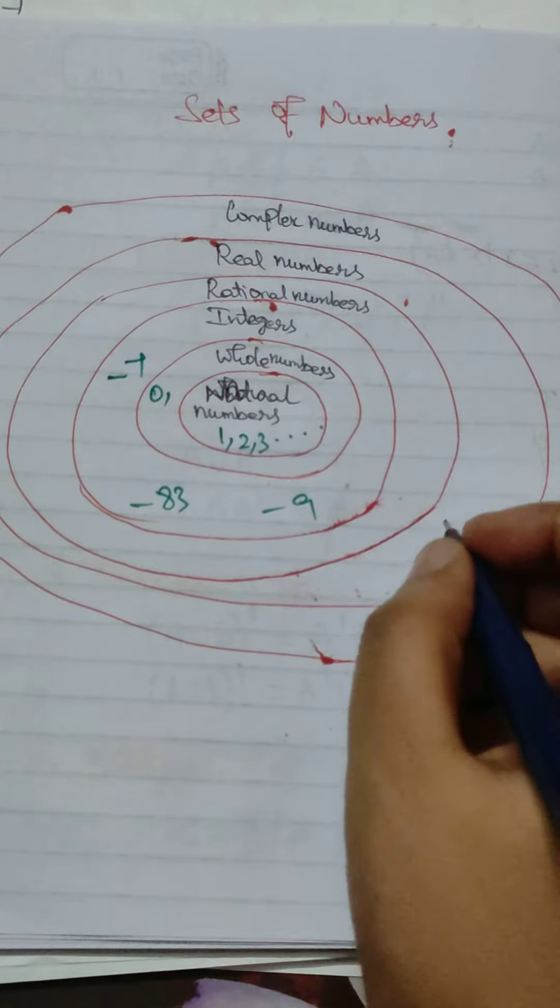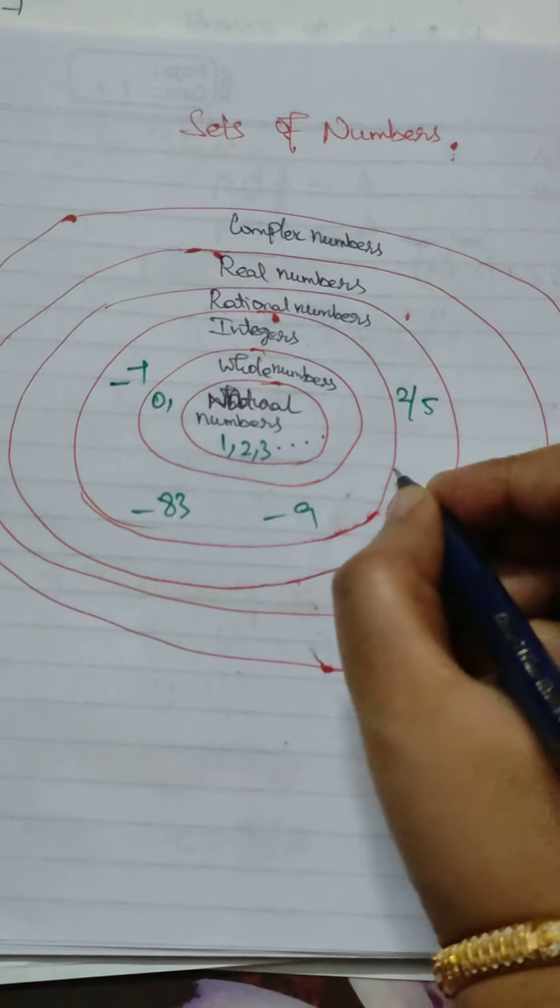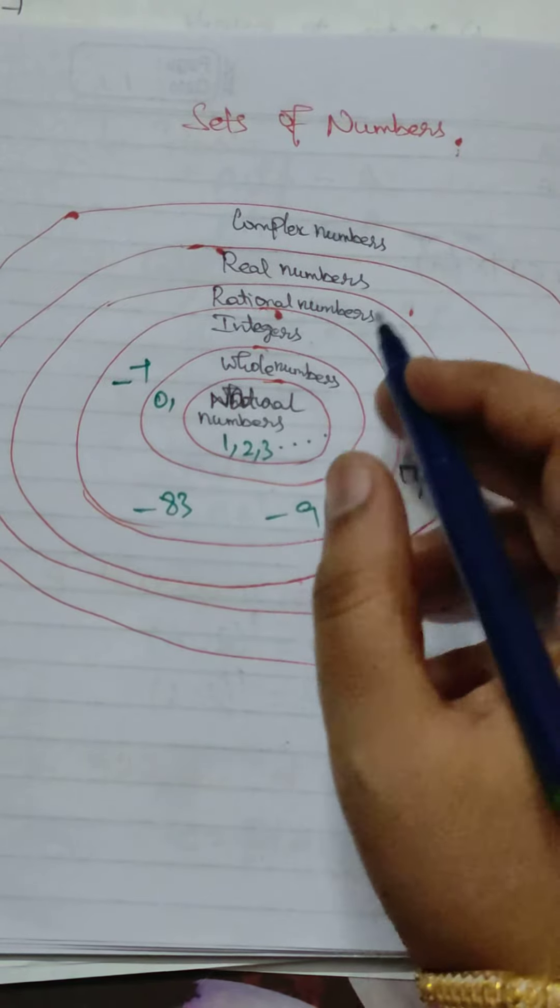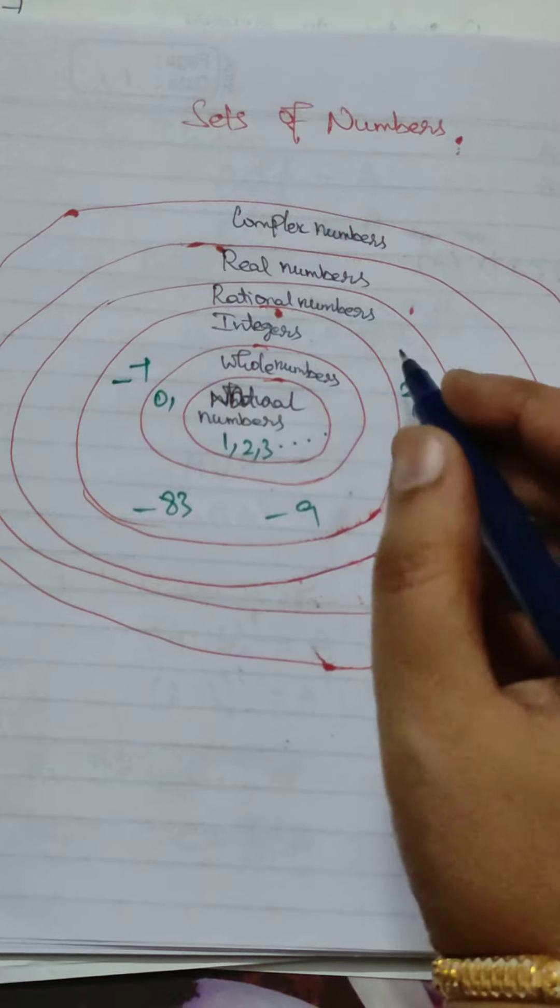Next one is rational numbers. This can be denoted by 2 by 5, 17 by 37. This kind of numbers are rational numbers which also includes integers, whole numbers, and natural numbers.